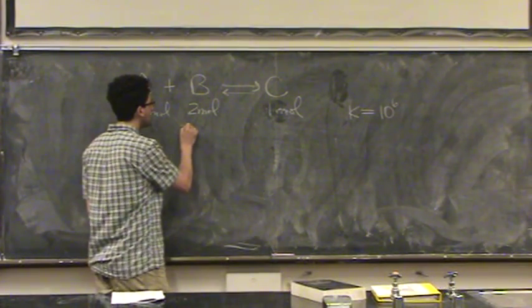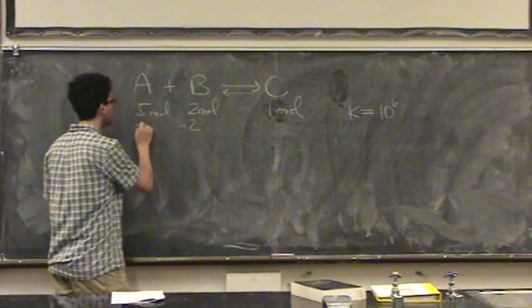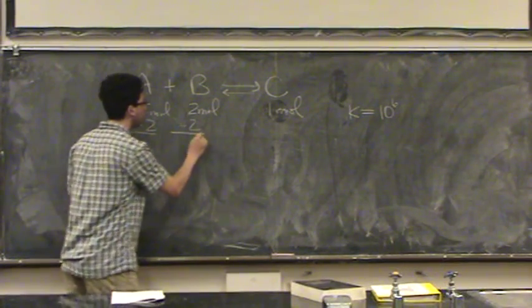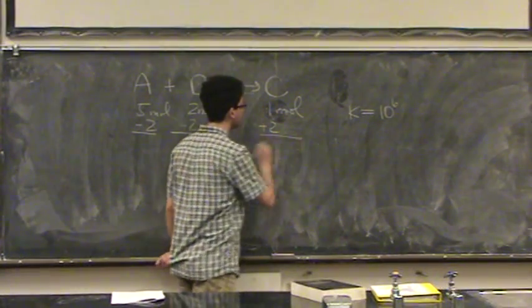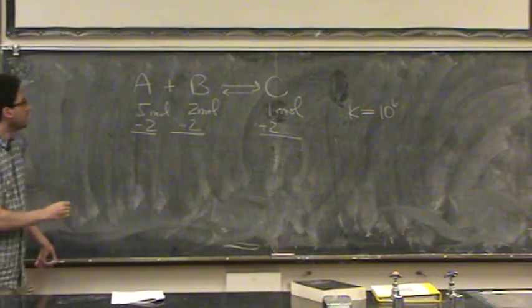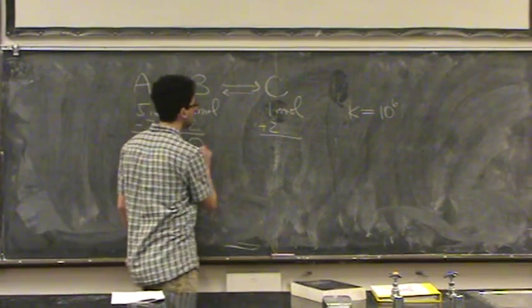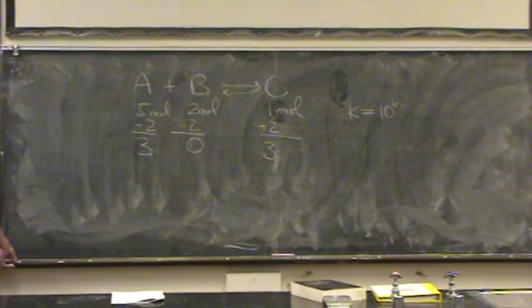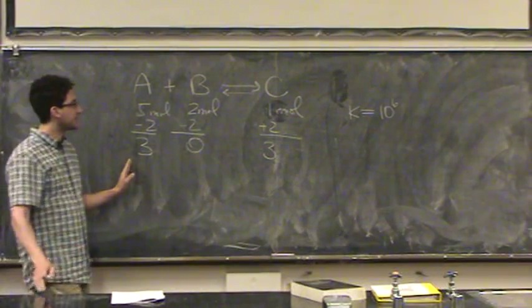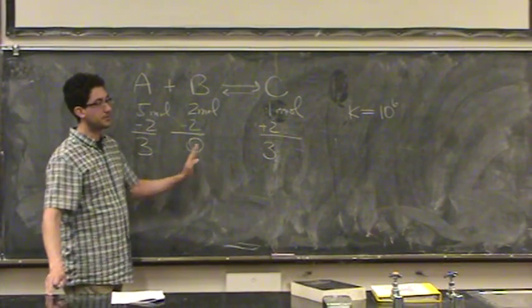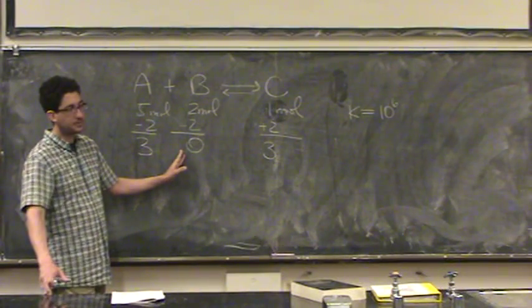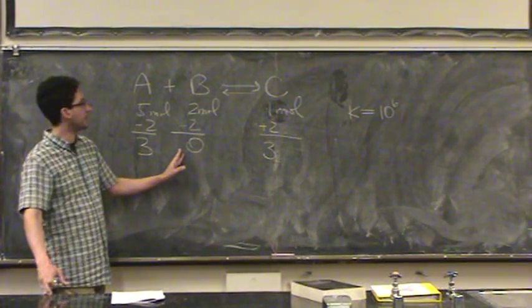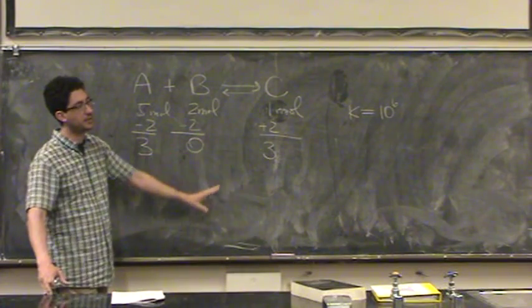Or in essence, I subtract the smaller number of moles from the reactants, and I add that number to the products. Leaving me with 3, 0, 3. Now, this makes sense. The reaction wants to go to the right because the right-hand side is favored, and there's nothing left of B, the limiting reactant on the left-hand side. It's all reactive. It should. It wants to go that way.